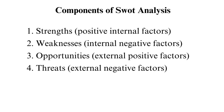Third, opportunities — external positive factors. Opportunities are the external factors that make your business prosper. Examples are less competition in your niche, media coverage of your company, and favorable tariffs. Fourth, threats — external negative factors. Threats are the factors that lead to your business's downfall. For instance, drought may threaten your ability to acquire raw materials if you are dealing with a food production company. Others include the high cost of materials, high competition, and negative media coverage.